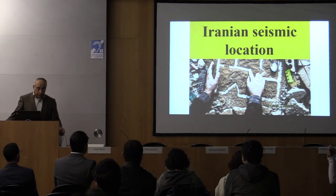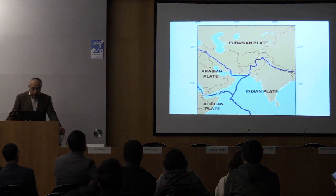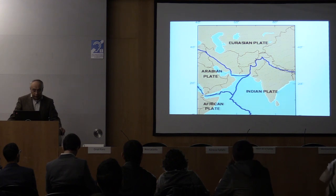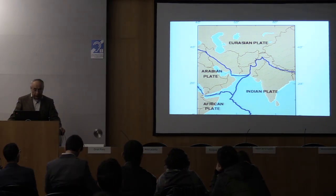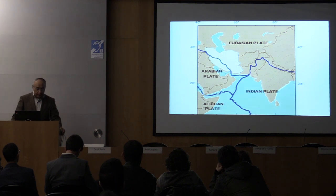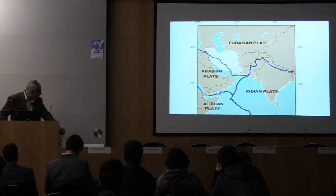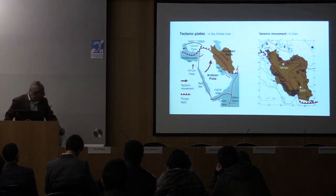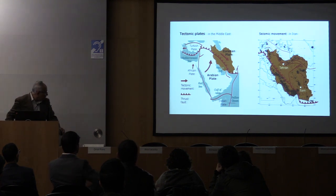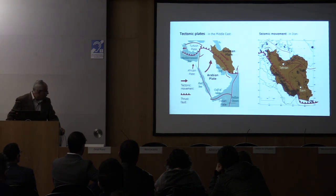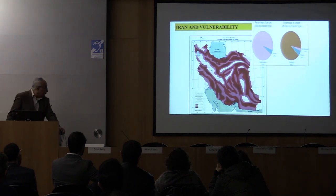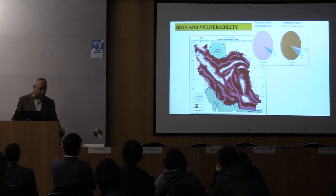First, let's talk about Iranian seismic location. As you can see here, we have four plates: Euro-Asian, Arabian, African, and Indian. Iran is here and unfortunately a big fault line is just passing through the country. The fault line is coming from the south to Iran and goes to the west, continuing to the Turkish plate and Arabian plate. It means that Iran is a seismic region, prone to disaster, especially earthquake.